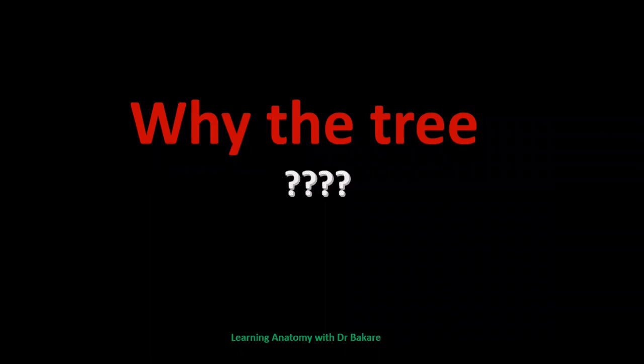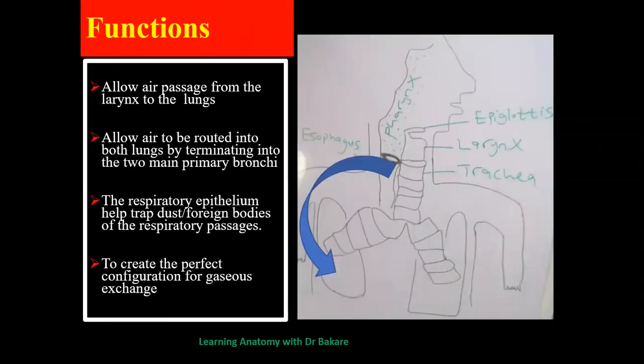What is the relevance? Does it present any form of function or importance? Basically, it allows air to pass from the larynx down to the lungs. It also creates a platform through which air is routed into the two lungs. They also have epithelium lining within them that trap foreign bodies or dust — as discussed in our previous lecture on the trachea. They also create a perfect configuration for gaseous exchange.